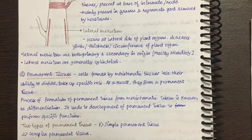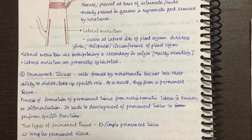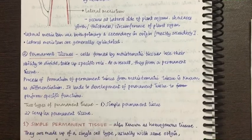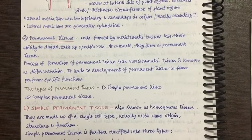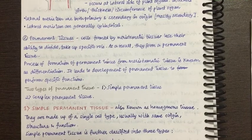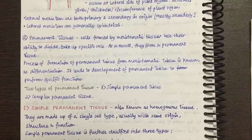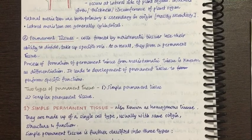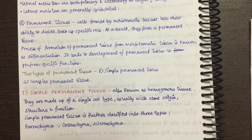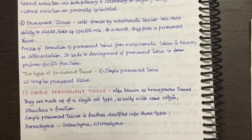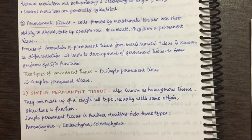Permanent tissue is of two types: Simple Permanent Tissue and Complex Permanent Tissue. Simple means only one type — homogenous. Simple Permanent Tissue is also known as homogenous tissue, made up of a single cell type with the same origin, same structure, and same function. Simple Permanent Tissue is further divided into three categories: Parenchyma, Collenchyma, and Sclerenchyma. We will study these in the next lecture.